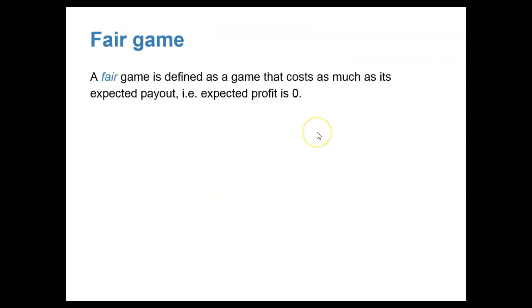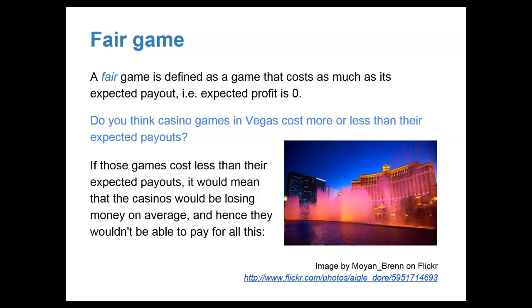Let me close today's presentation by briefly discussing what a fair game is. A fair game is defined as a game that costs as much as its expected payout. That is to say, its expected profit is zero. So do you think casino games in Vegas cost more or less than their expected payouts? Well, it would be fair to say that if those games cost less than their expected payouts, it would mean that the casinos would be losing money on average, and hence they wouldn't be able to pay for all of this that you see in the picture that is shown.